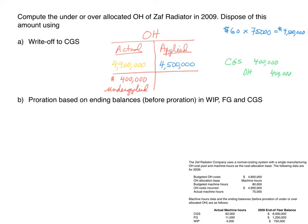A second method is to close the overhead balance to work in process, finished goods, and cost of goods sold — the three inventory accounts — based on a proration of their ending balances. Going back to our original data, machine hours in those three accounts total 75,000, and the ending balances add up to $10,000,000.